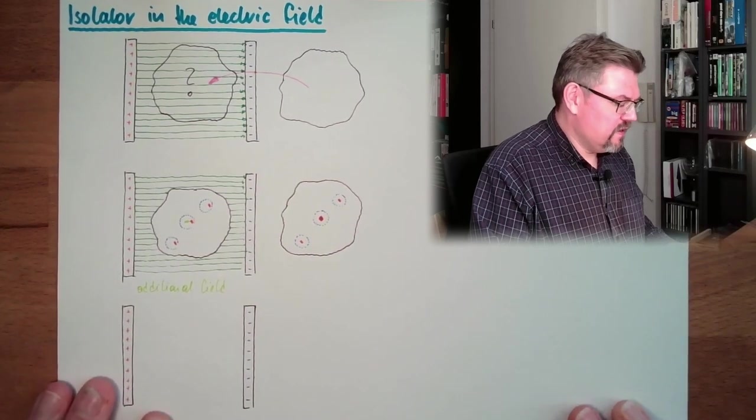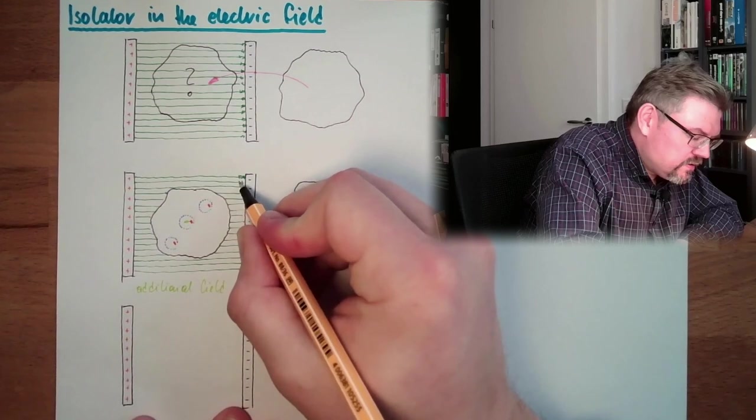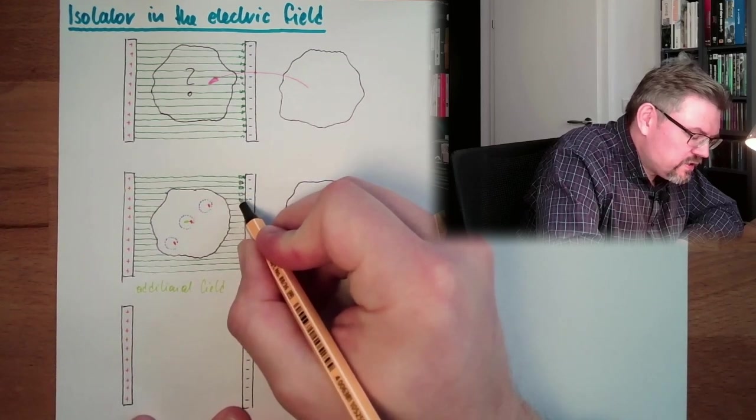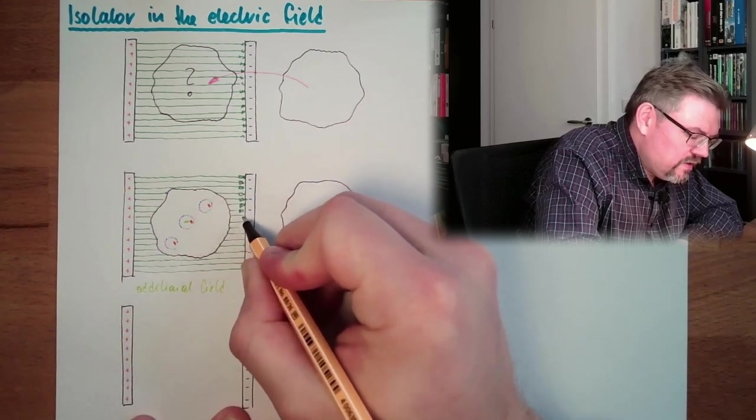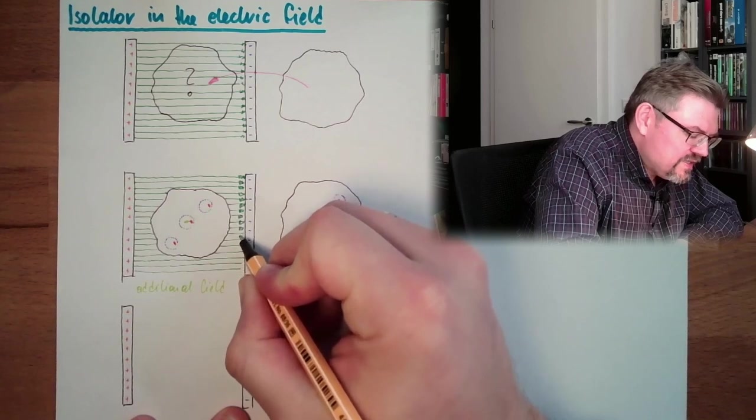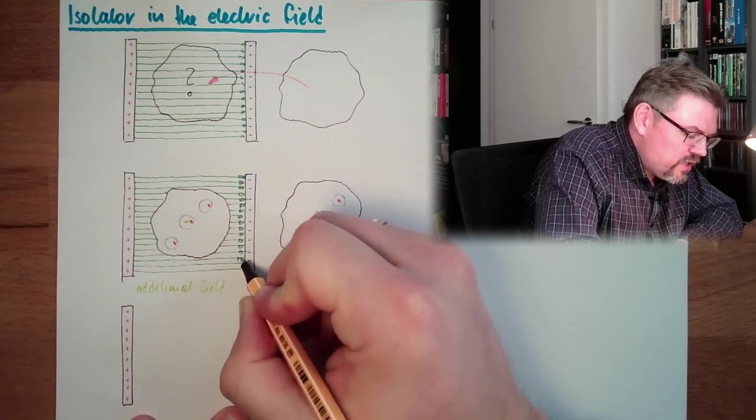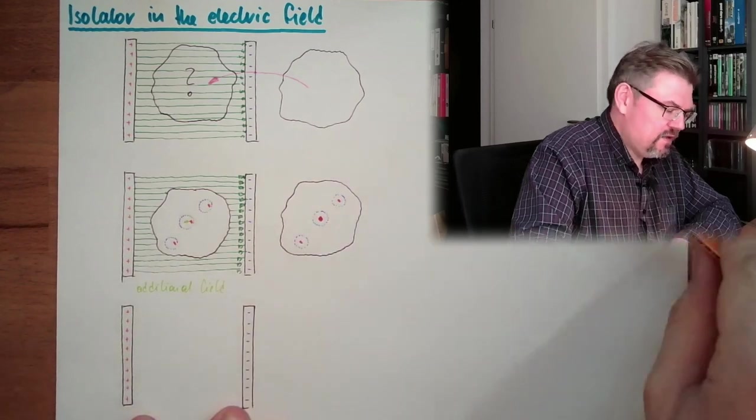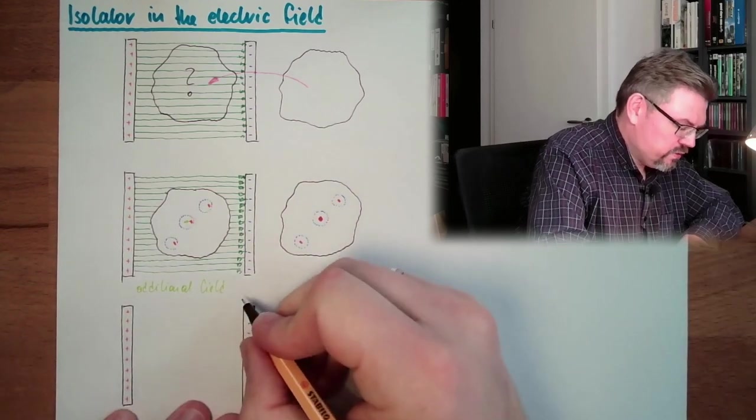The outside field, this is the electric field, and this is going in this direction, right? So we have an electric field in this direction, and we have an additional field which is in the opposite direction. Right here, opposite direction.